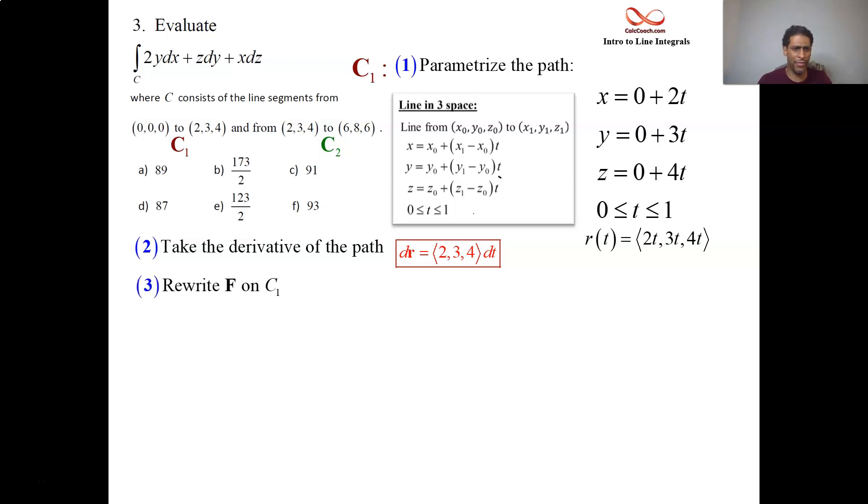There's F here, and we have to rewrite that F so it's only on our path C1. How do you look at the line and know what F is? The dx, whatever's multiplied by dx is the i component, whatever's multiplied times dy is the j component, whatever's multiplied by dz is the k component. So 2y, z, and x, that's your F.